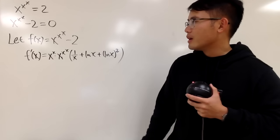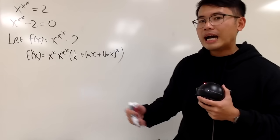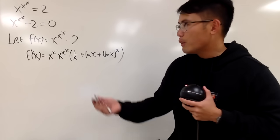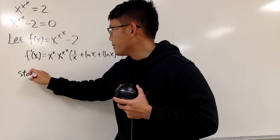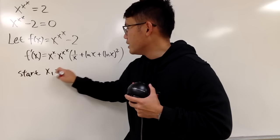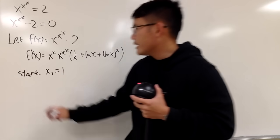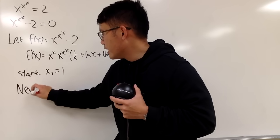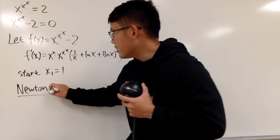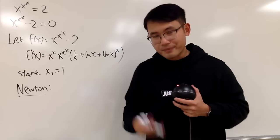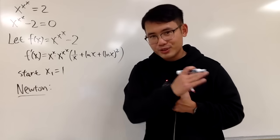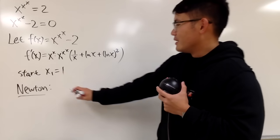And now, to use Newton's method, I have to pick a beginning value. I will just say I want to start, I want to pick x1 to be 1. And then, of course, by Newton, I will write down the formula for you guys. And yes, I have a video on how we derive the formula, so go check that out if you haven't seen it already.